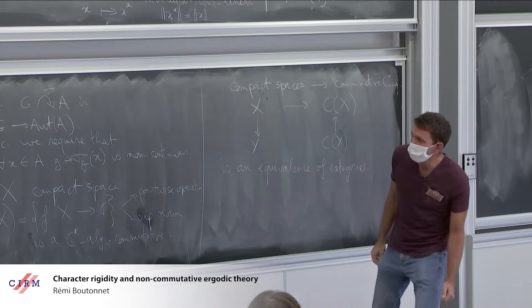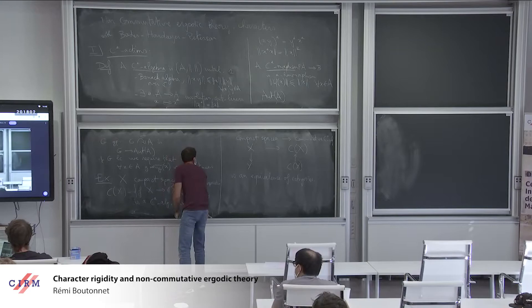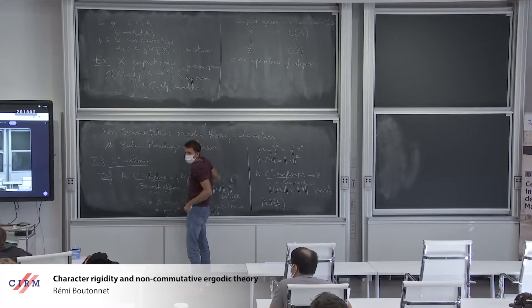The converse functor is explicit — it's just the spectrum of a C*-algebra that gives the compact space. In this picture, if you have a group action on C(X), it really corresponds to a group action by homeomorphisms on the space X.